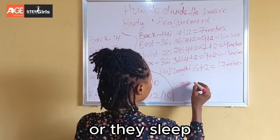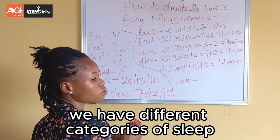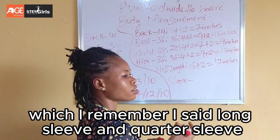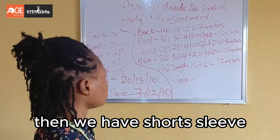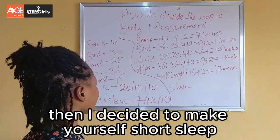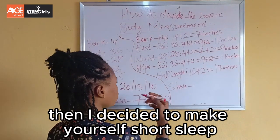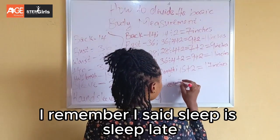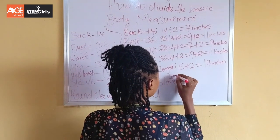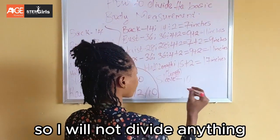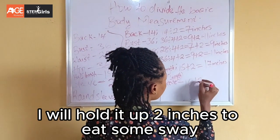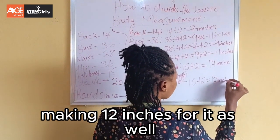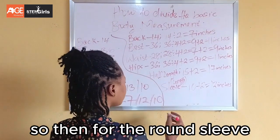For the sleeve, we have different categories: long sleeve, quarter sleeve, and short sleeve. I decided to make use of short sleeve, so I'm using 10 inches. Since sleeve length also takes the word 'length,' I will not divide it — I will only add 2 inches to it, making 12 inches for sewing.